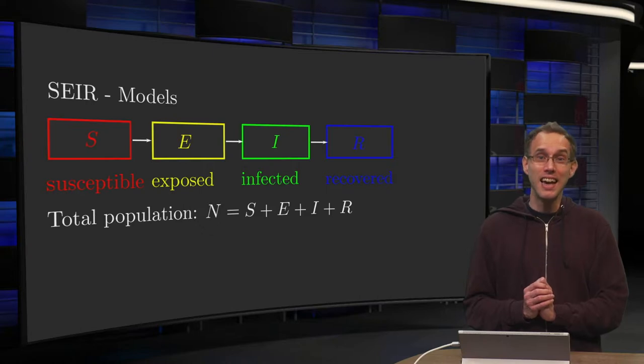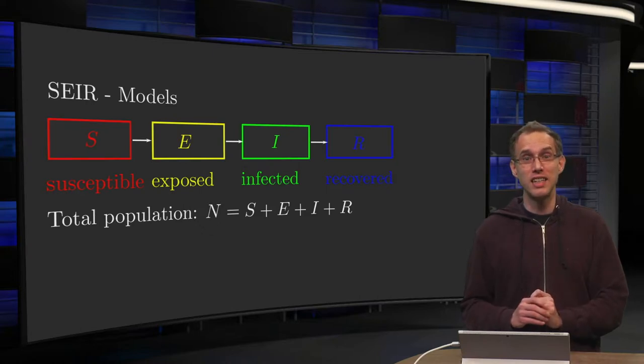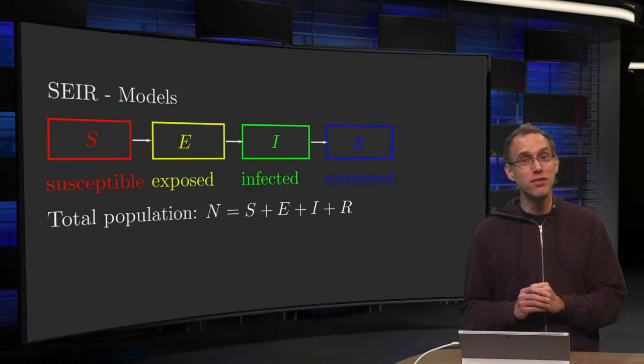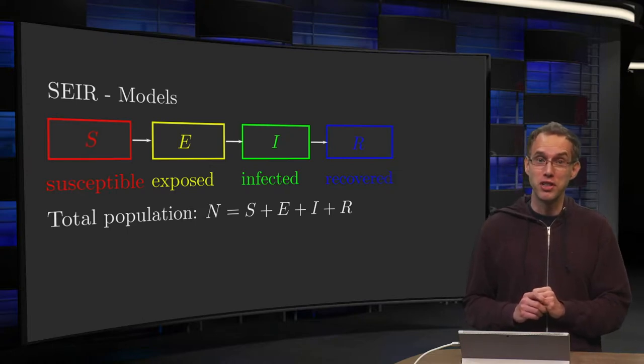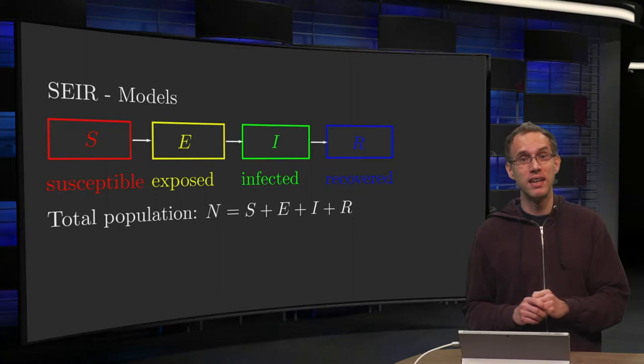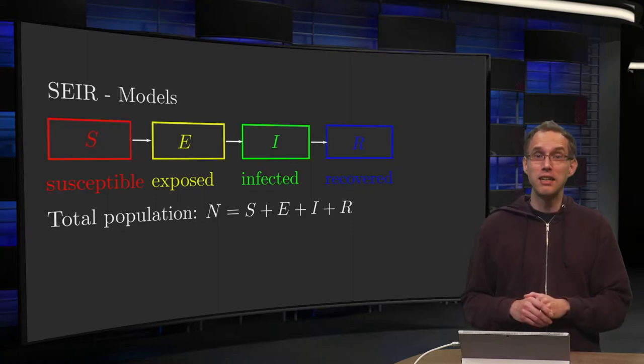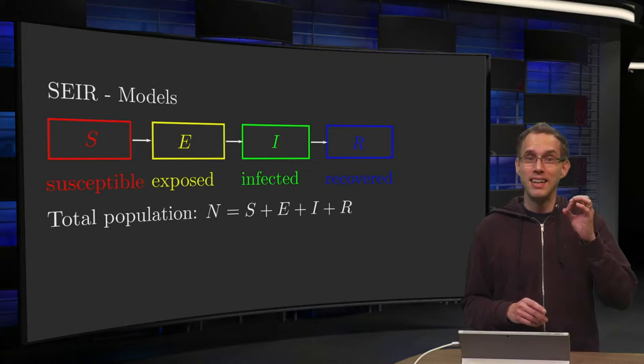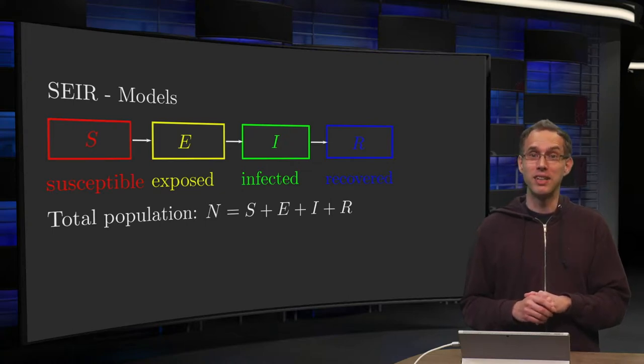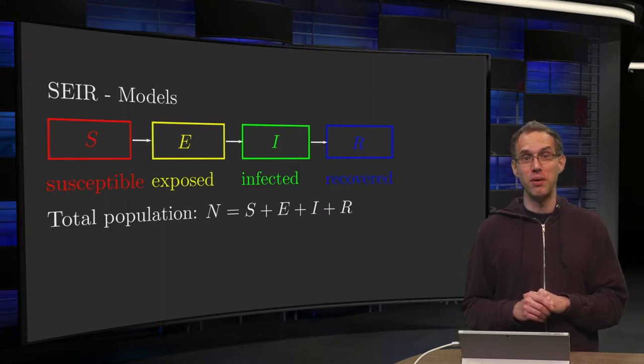Fortunately there is such a model. This is called the SEIR model. In this video we will learn how this model describes the evolution of an epidemic. As you will see, this model is not complicated at all from a mathematical point of view. There is one catch though which we will encounter at the end of this video.